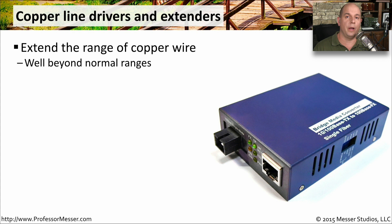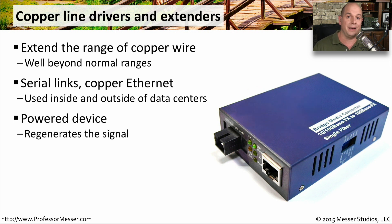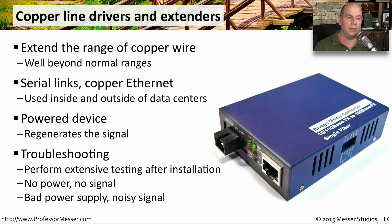With wide area networks, we're going over very long distances, so the WAN provider usually has some type of signal regeneration or extender built into the lines. This is not something you'd normally see, but the provider uses it on their side. You often see this on serial links; you could also use it on copper Ethernet, depending on the type of media converter or media extension device. This is often a powered device because it is regenerating a signal between one link and another, and it's sometimes useful when performing testing after installation.